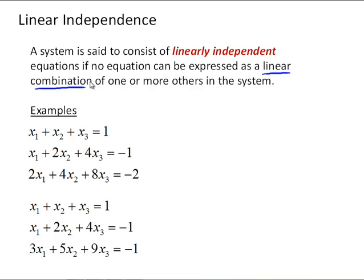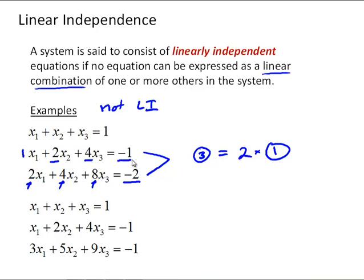So here's some examples that are not linearly independent. So if we look at this first example, and you look at these two equations, you can see that equation three is equal to twice of equation one. In other words, the coefficient for x1 is twice the coefficient of one here. The coefficient for x2 is twice the two. The coefficient of eight is twice the four. And the constant on the right hand side, negative two, is twice negative one. So this makes this system not linearly independent.